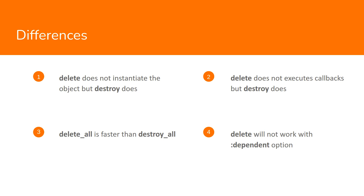delete_all is for deleting all records and destroy_all is for destroying all records existing in the database for that particular model. The delete_all method only returns the number of objects deleted. destroy_all, as we saw with multiple destroy, first instantiates all the objects and then starts deleting them one by one, making it very time-consuming. So delete_all is faster than destroy_all.